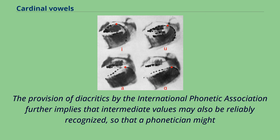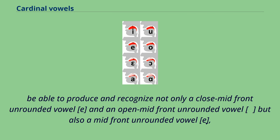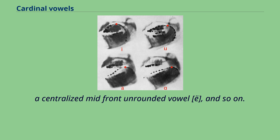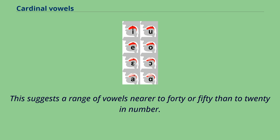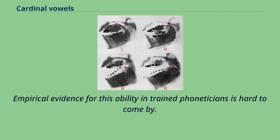The provision of diacritics by the International Phonetic Association further implies that intermediate values may also be reliably recognized, so that a phonetician might produce and recognize not only a close-mid front unrounded vowel e and an open-mid front unrounded vowel, but also a mid-front unrounded vowel, a centralized mid-front unrounded vowel, and so on. This suggests a range of vowels nearer to 40 or 50 than to 20 in number.